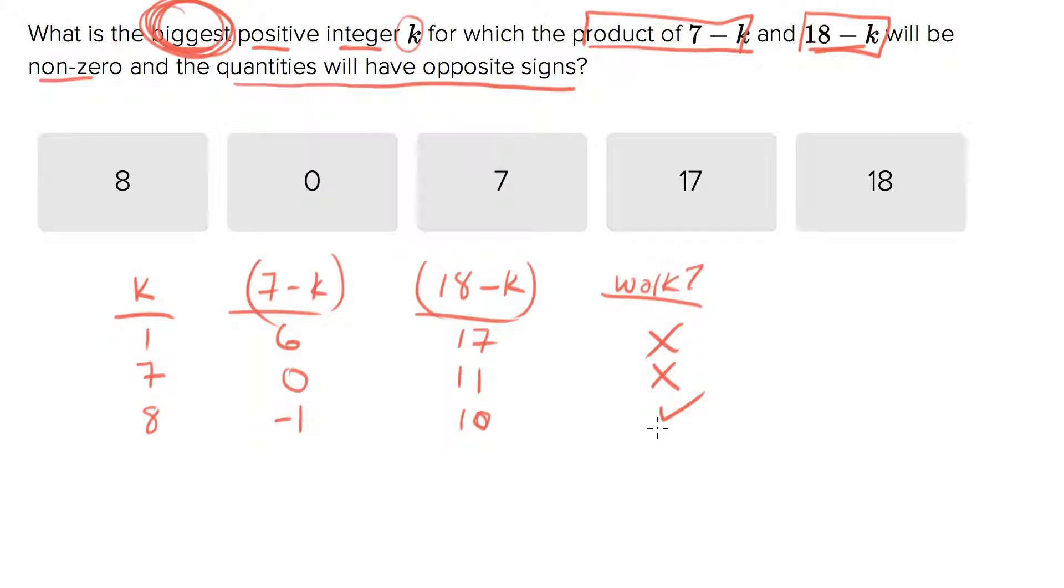But beware—you might be tempted to pick the answer 8 right now. Remember, the question didn't ask you what is the smallest value of k that works. They said what is the biggest possible value for k that works. So if 9 works we need to go with 9. I'm actually going to zoom all the way up. Let's pick 18 and see if that works because that's the biggest one we have an option for. 7 minus 18 is negative 11, 18 minus 18 is 0. So this fails because it's not non-zero.